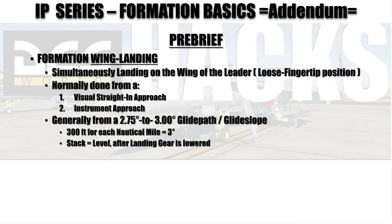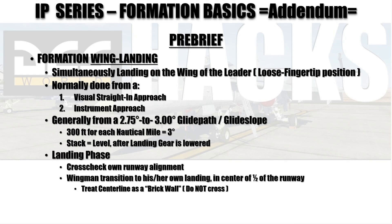Once you get ready to land, the wingman will start cross-checking runway alignment to his or her half of the runway, transitioning to make their own landing in the center part of their half. We always treat the centerline like a brick wall — do not cross it so you don't run into your leader or vice versa. Now let's take a look at the demo video.